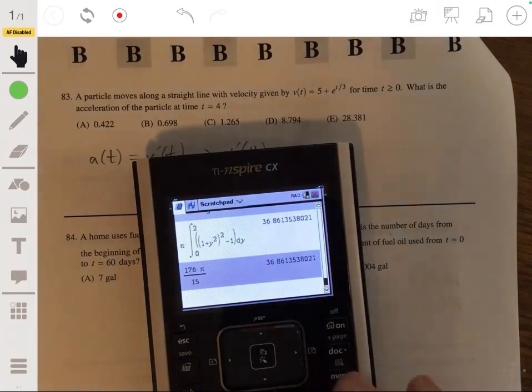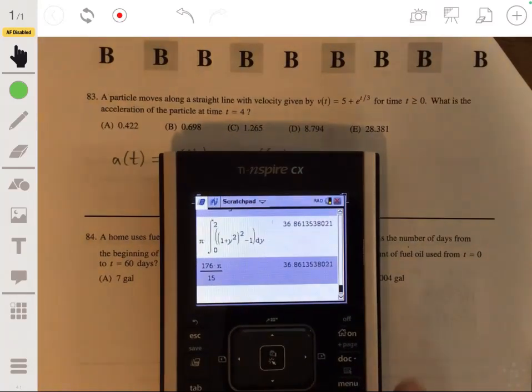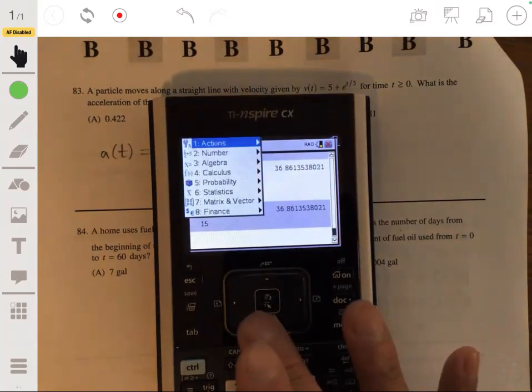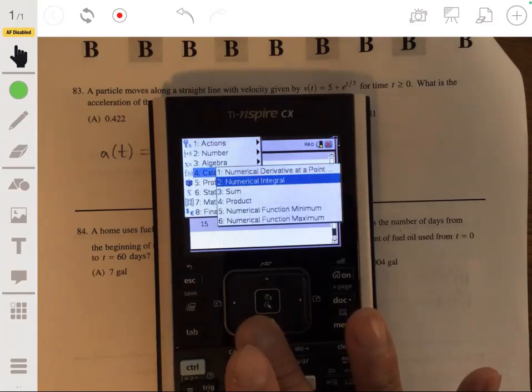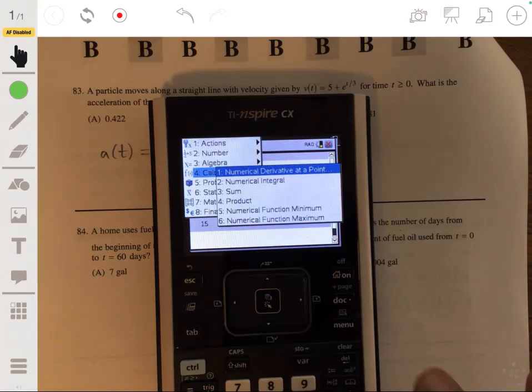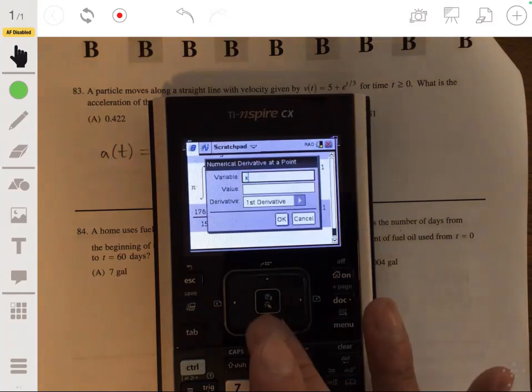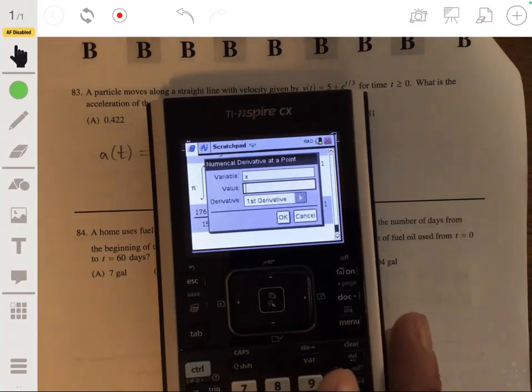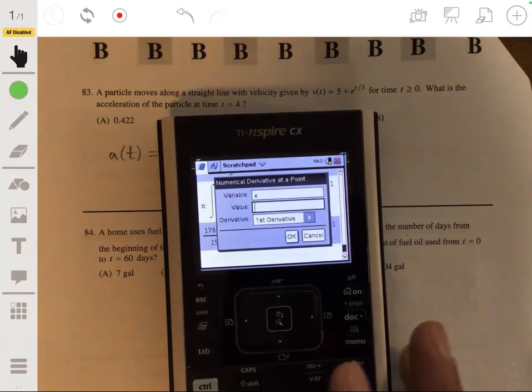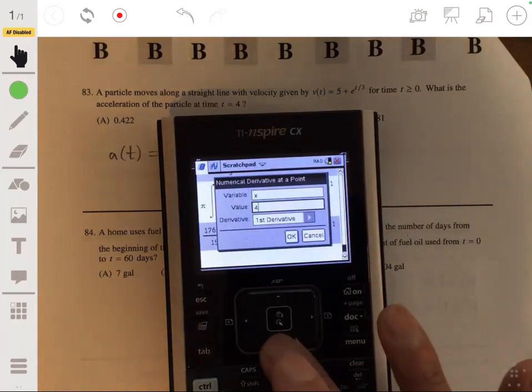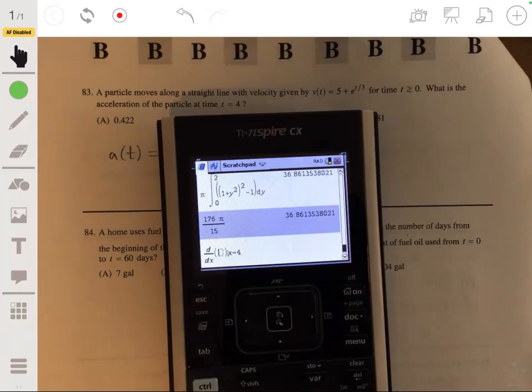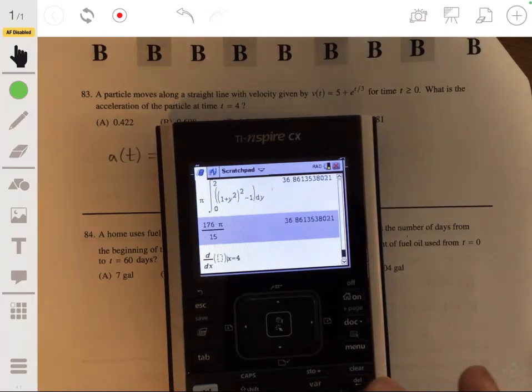So let's go to the calculator screen. Go to the menu, Calculus, and Numerical Derivative at a point. Variable will be x at 4. We'll enter our equation, 5 plus e to the x over 3. And let's see what we get.